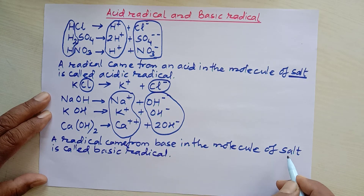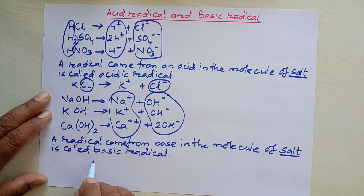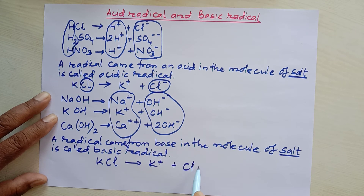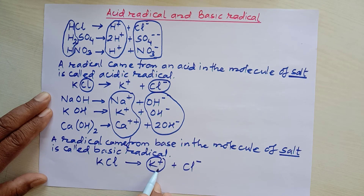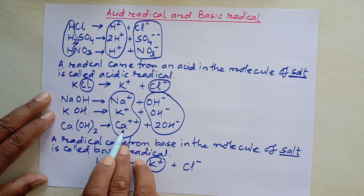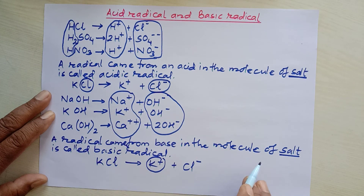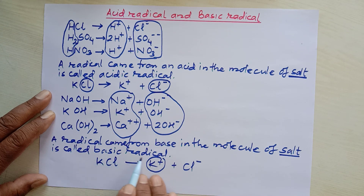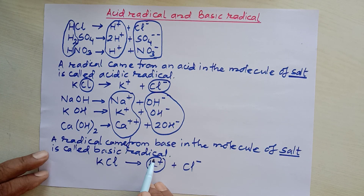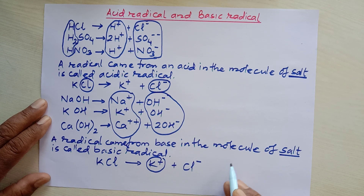The basic radical is also defined in terms of salt. Taking the previous example, potassium chloride is a salt that ionizes into potassium ion and chloride ion when dissolved in water. The potassium radical came from a base like potassium hydroxide, so potassium, calcium, sodium, and similar metal radicals are called basic radicals — also known as metallic radicals.